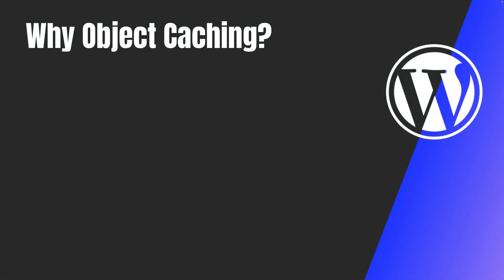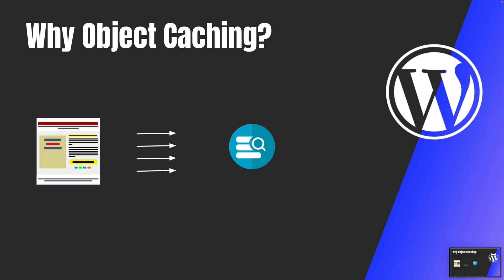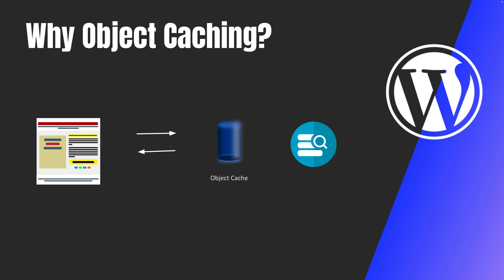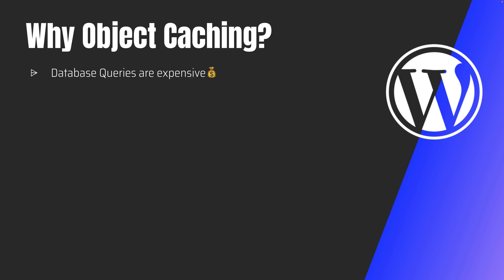First of all, let's try to understand why we need object caching. Every time a page loads its content, it sends one or often several database queries. If you use object caching, the data is stored in the cache and it's ready to be displayed on the page in a flash. As I explained in the previous video, database queries are expensive and it takes time to get data from the database.